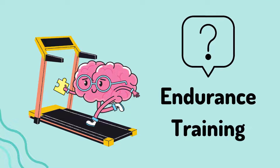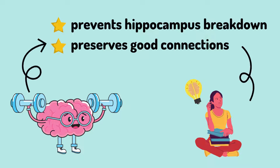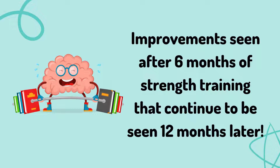The use of endurance training to promote hippocampal neuroplasticity in older adults with mild cognitive impairment has been studied and has led to mixed results. Currently, new research is being done to explore progressive resistance training as an alternative to endurance training, and has been shown to result in preventing the breakdown of the hippocampus and preserving good connections in the brain, thus improving cognition in those with MCI. These effects are clear after six months of high-intensity resistance training and continue to be seen at least 12 months after the end of intervention. Therefore, early prevention in the breakdown of this part of the brain could help prevent the downward cascade to dementia and possibly to Alzheimer's disease.